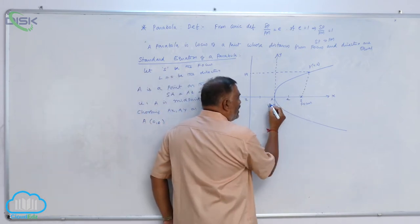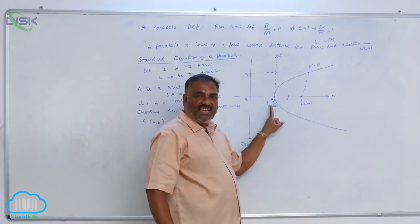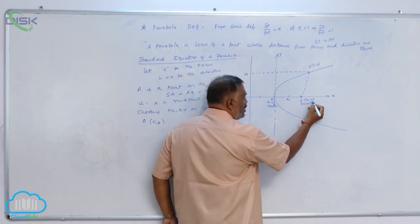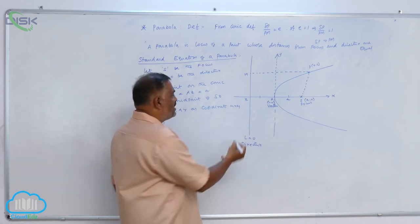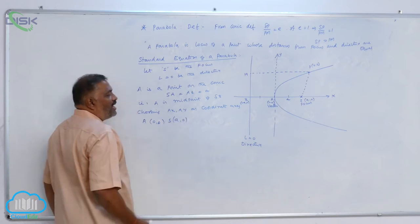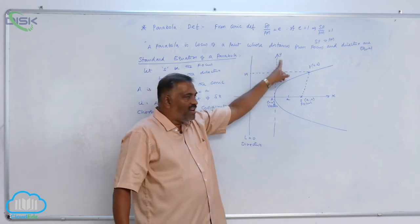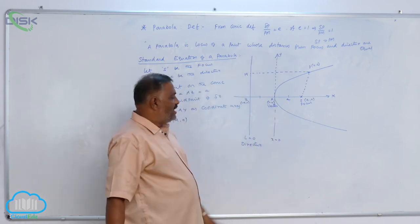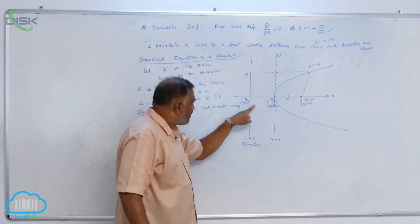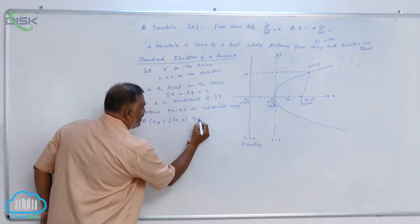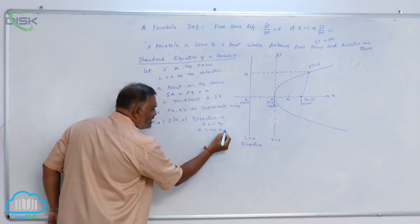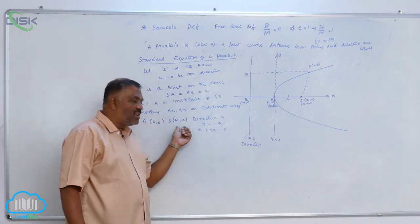Z becomes (−a, 0), and S becomes (a, 0). You know that the y-axis has equation x equal to 0, and the directrix is parallel to the y-axis at a distance of a units. So the directrix becomes x equal to minus a, or x plus a equal to 0. We have now obtained the focus and the directrix.